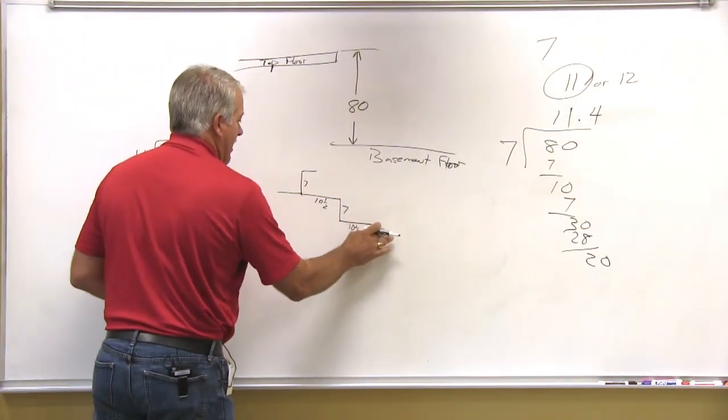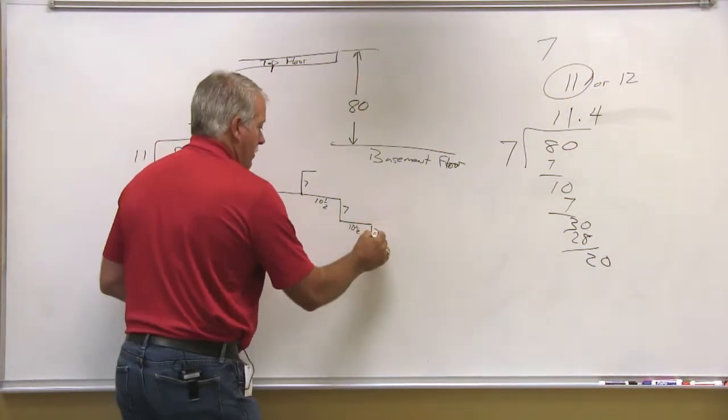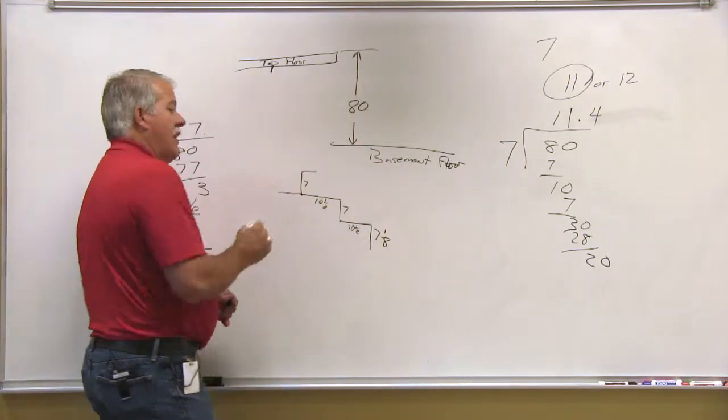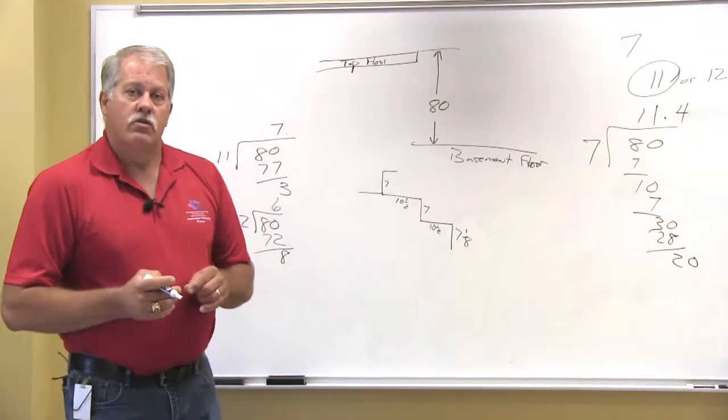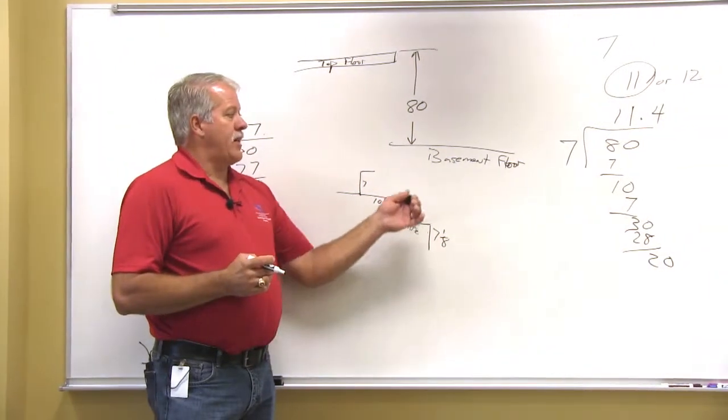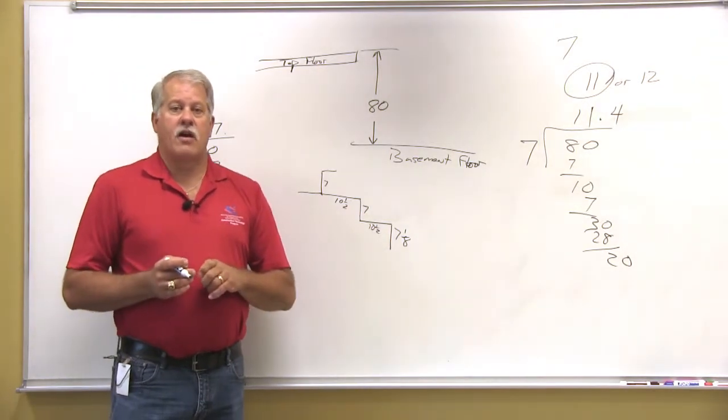This distance, then, would be whatever answer we came up with here. And it would be, if it were 7 and an eighth, then each riser height would be 7 and an eighth. So, once again, the basic principle of figuring riser height so that you can lay out the stairs.